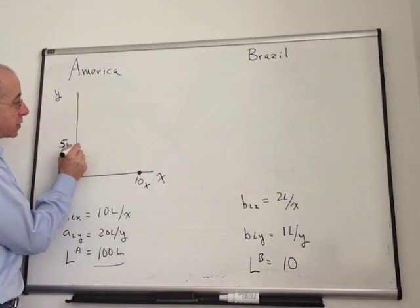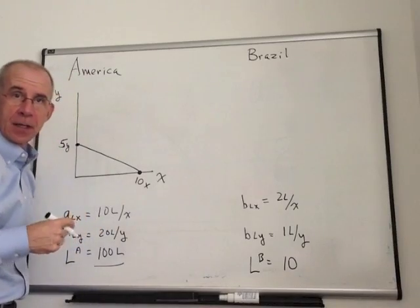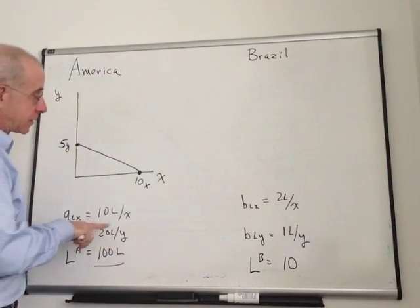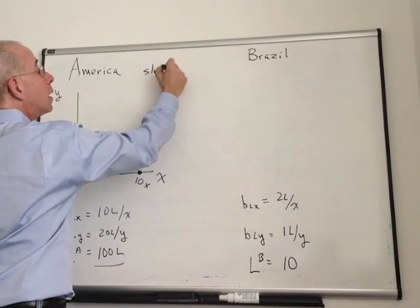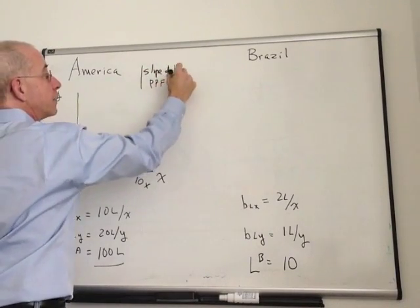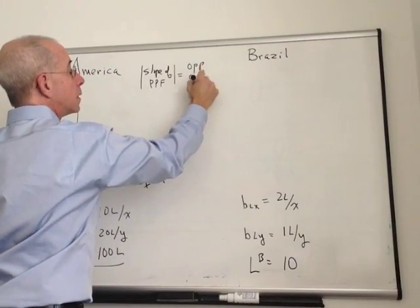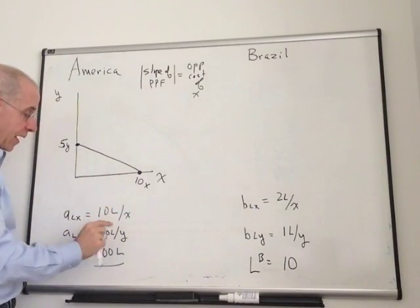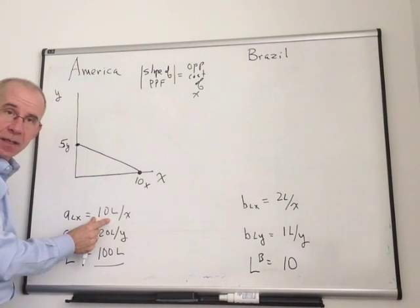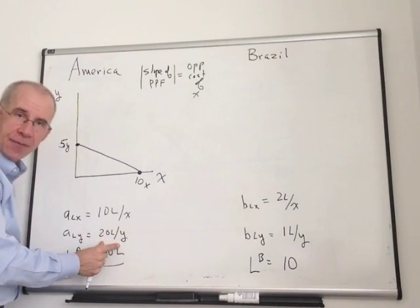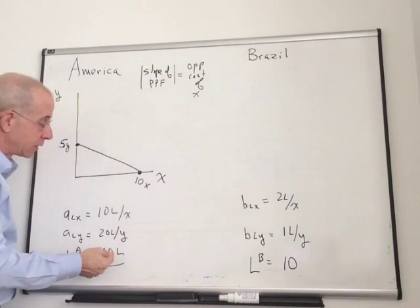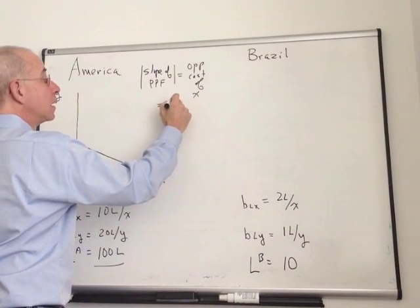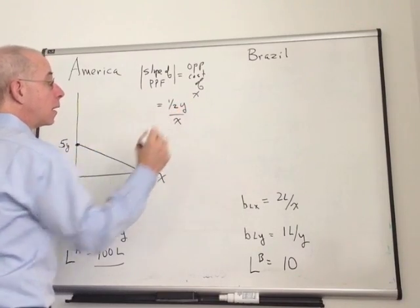Now, with the constant returns to scale in the Ricardian model, that trade-off is constant. It's a linear production possibility frontier. It's a constant trade-off between Y and X. The slope of the PPF, actually the absolute value, is equal to the opportunity cost of X in terms of Y. If we produce a unit of X, it's going to take 10 workers. That is enough workers to produce only half of a unit of Y, because it takes twice as much labor to produce Y.